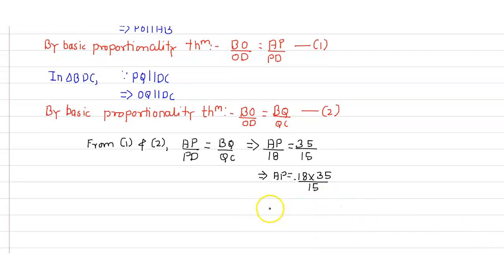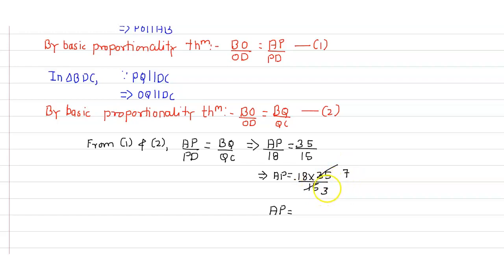Simplifying by dividing by 5: 15 divided by 5 is 3, 35 divided by 5 is 7, and 18 divided by 3 is 6. So 6 times 7 is 42. Therefore AP equals 42 centimeters.